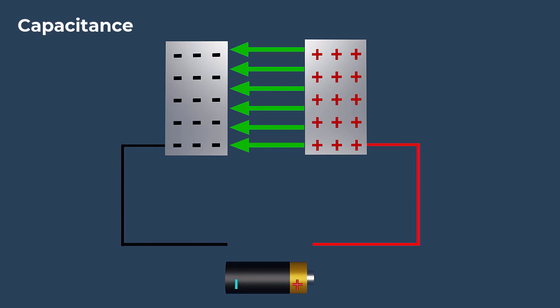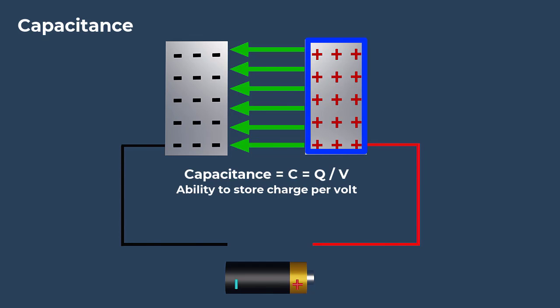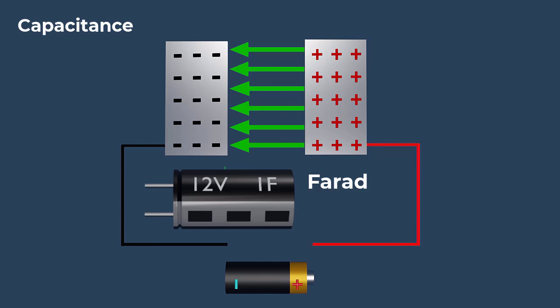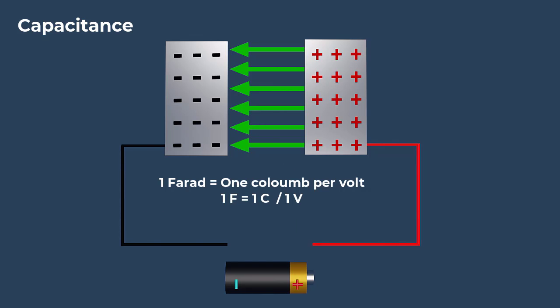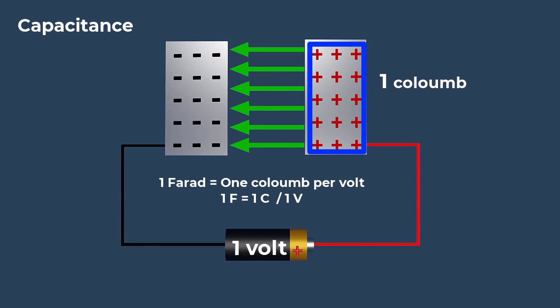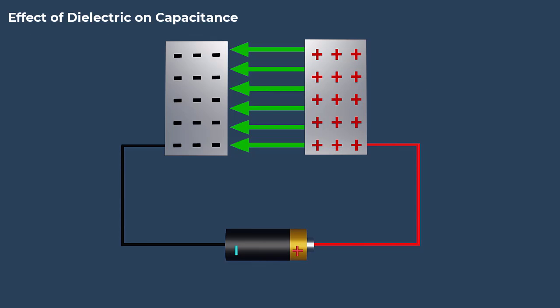The ability of a capacitor to store electric charge is called its capacitance. It is measured in farad. One farad is the capacitance of a capacitor that stores one coulomb of charge when the voltage across its terminals is one volt.